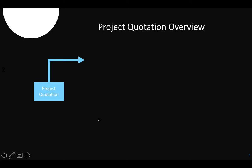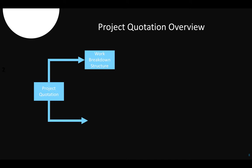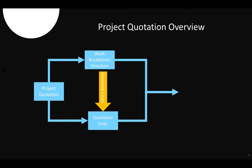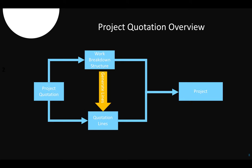Quotations can be developed in two ways. The first way is you can define a WBS, or you can have quotation lines defined in the project management module. The best thing is if you are creating a WBS structure, you can later convert those WBS items into quotation lines, and then once the quotation lines are generated from the WBS, they will be transferred into a complete project.